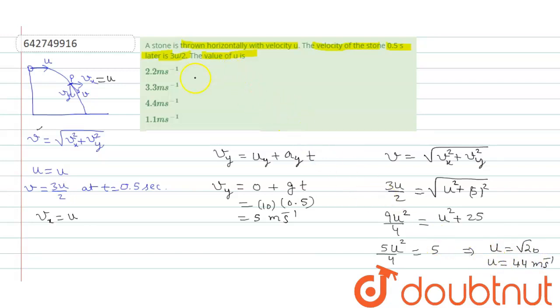We have to find the value of u, which becomes 4.4 meters per second. We can say that option 3 is correct.